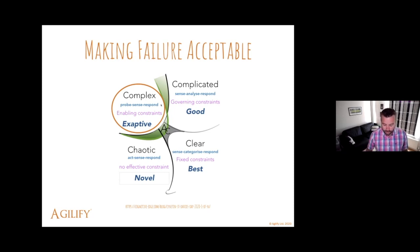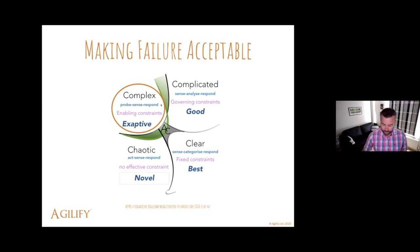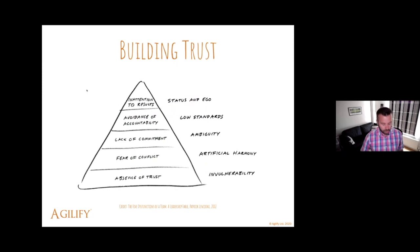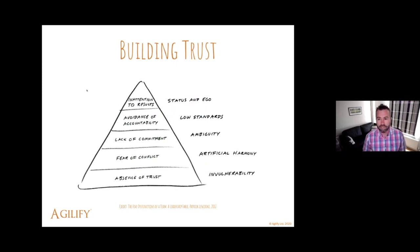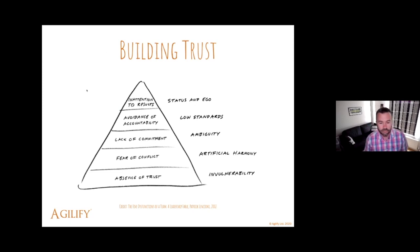So making failure acceptable is one thing. Another thing I'd like to talk about is one of my favourite books and one of the big influences for me when I was writing my book — Patrick Lencioni's work around The Five Dysfunctions of a Team.